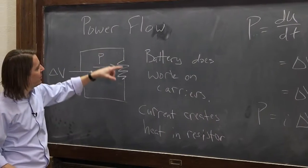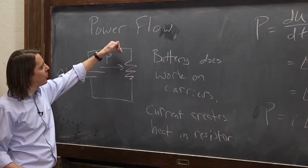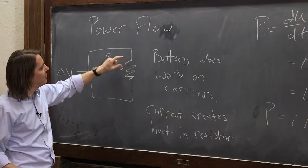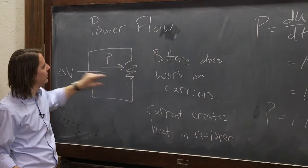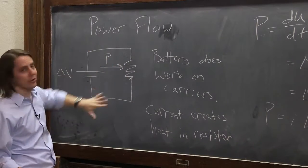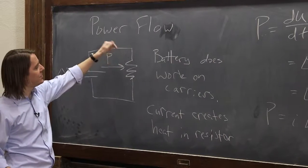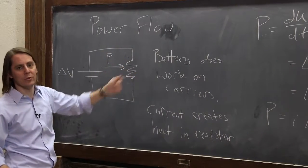This p equals i delta v applies actually to any circuit element. You can also think about the resistor. The current flowing through it times the delta v that you lose, which in this case is equal to what you gain in the battery, because there's nothing else in the circuit. That's how much energy, or that's the power that you lose that goes out to heat.